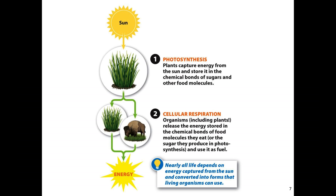We have energy from the sun being used to power photosynthesis, which is the production of organic material. Then that organic material in plants needs to be broken down into ATP or energy. As humans we aren't photosynthesizing — we're simply doing cellular respiration. We start with glucose, break it down, and store that energy in ATP. Plants need to first harvest energy from the sun, convert it into glucose, then break down that glucose into ATP to power cellular processes.